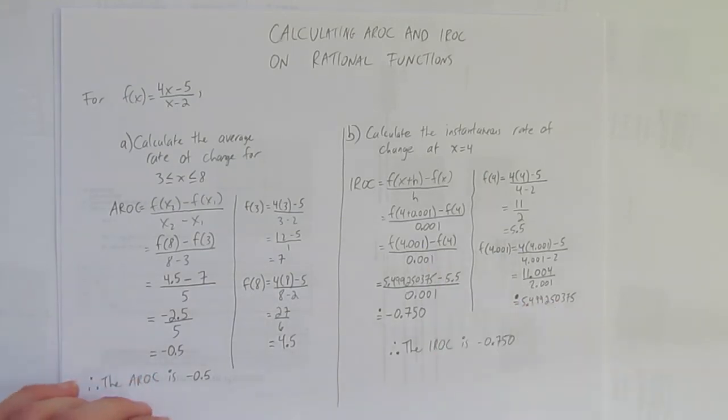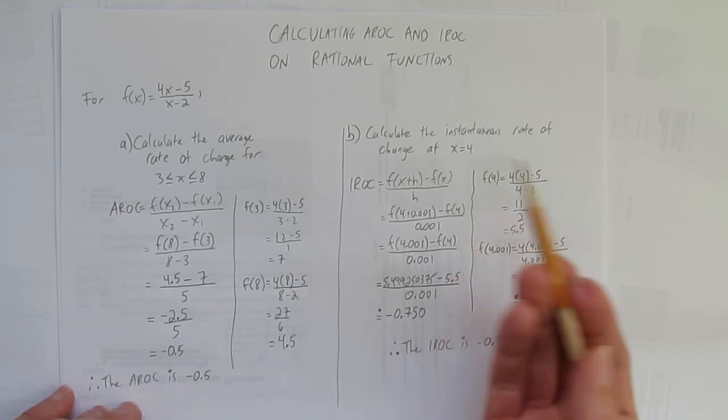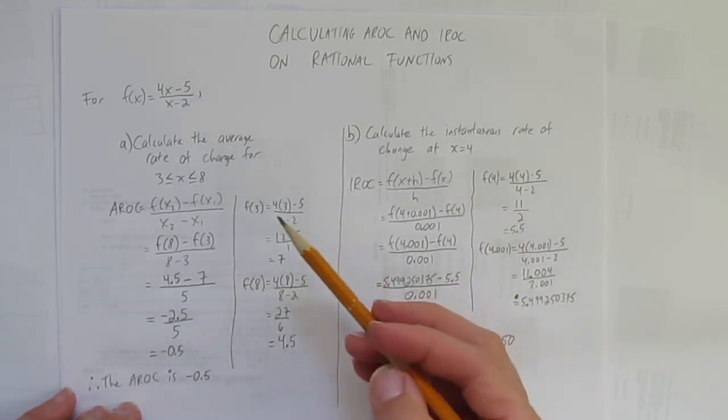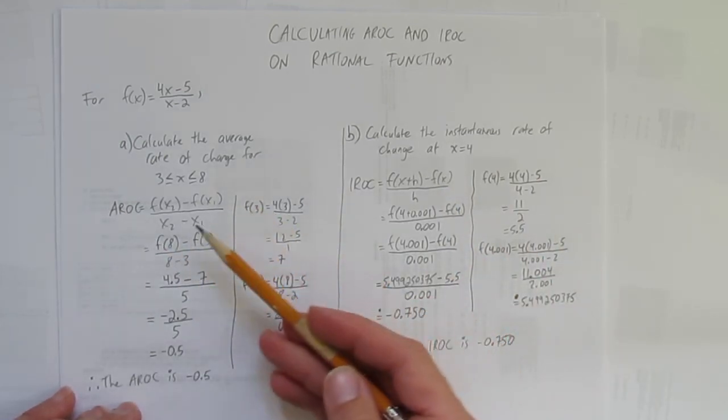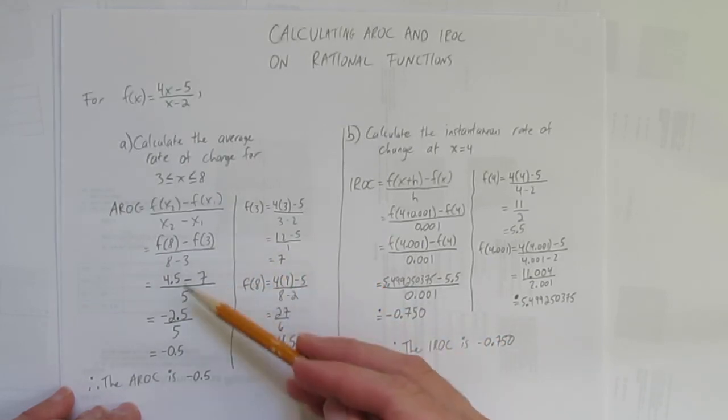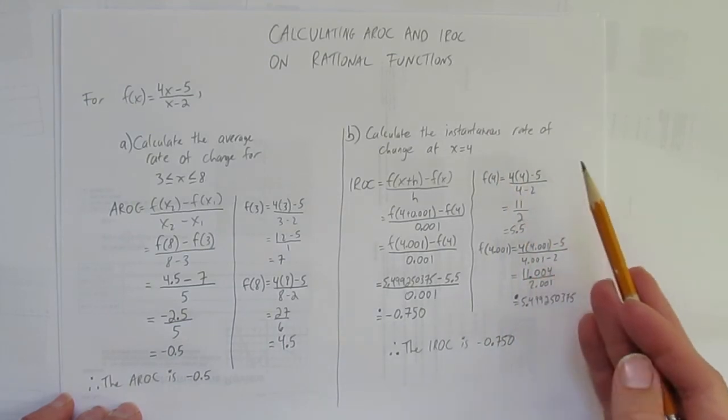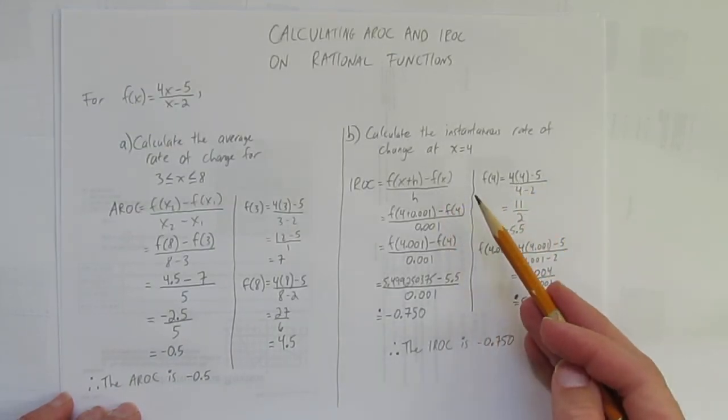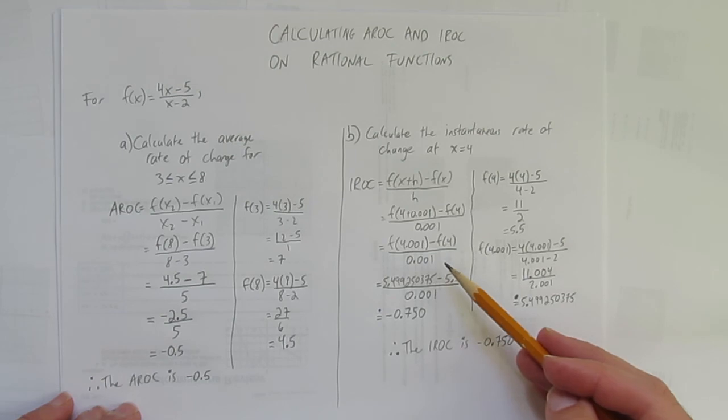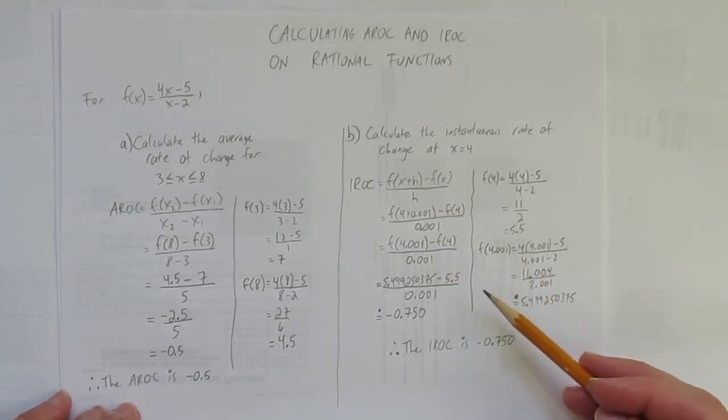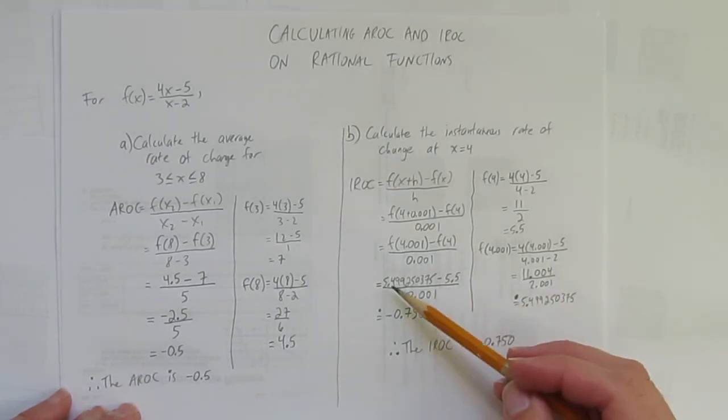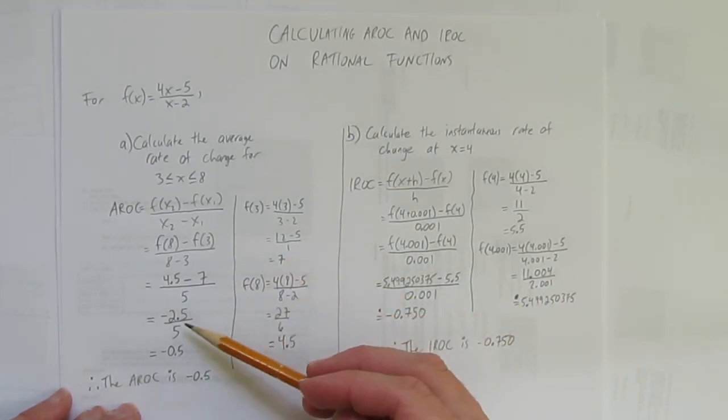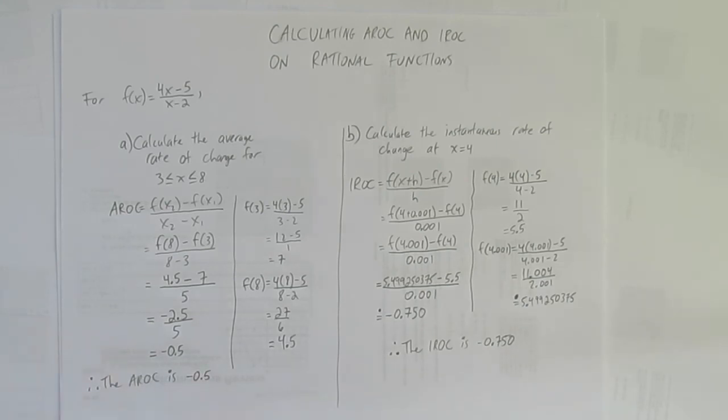And there you have it. We've calculated the average rate of change and the instantaneous rate of change on a rational function. The first one, we used what's basically a formula of slope. We calculated these two values, subbed in and solved. Make sure to show your formula. Doing the instantaneous rate of change is very similar, slightly different formula. One extra step of work to show, to show the adding on of that 0.001. And watch out with your rounding dots. Also make sure your fractions completely cover all the numbers in their fractions. That's it. Now you know how.